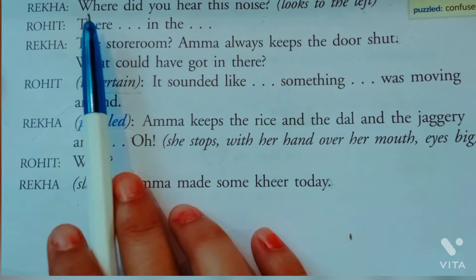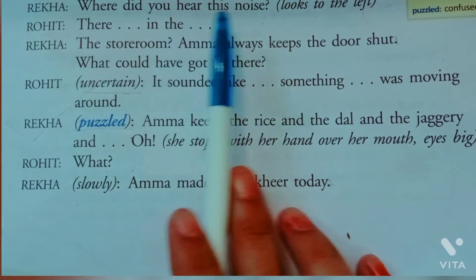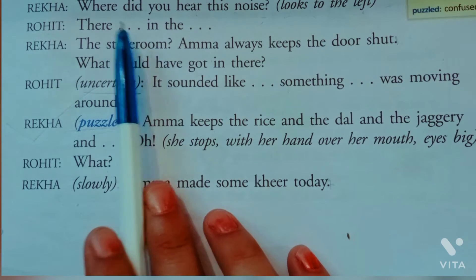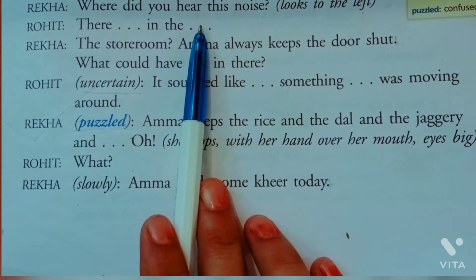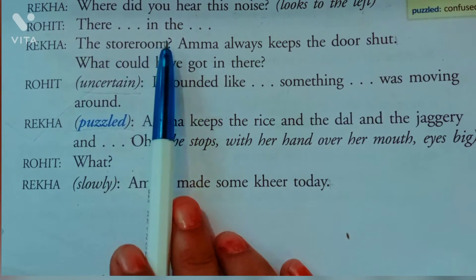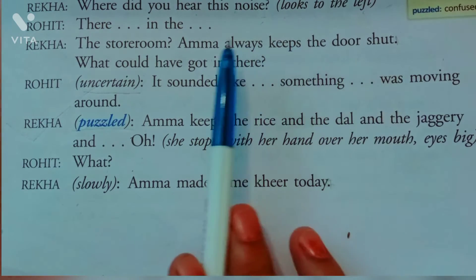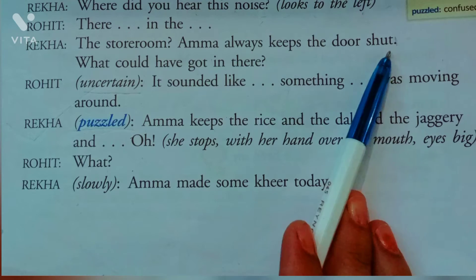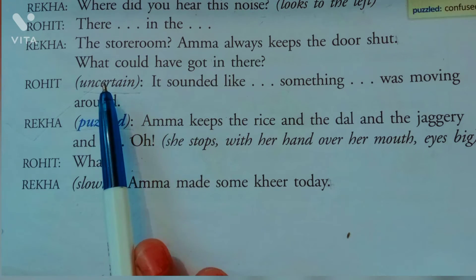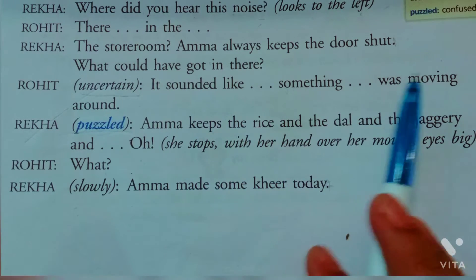Rekha left ki taraf dekhte hue poochti hai 'Where did you hear this noise?' Rohit phir se kaanpti awaaz mein bolta hai 'There' — wahan par. Rekha poochti hai 'The storeroom? Amma always keeps the door shut. What would have got in there?' Rohit bolta hai 'It sounded like something was moving around' — koi cheez idhar udhar ghoom rahi thi.